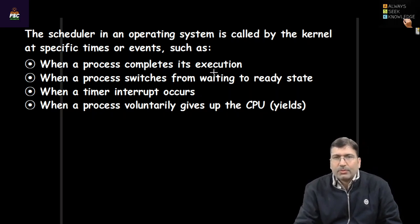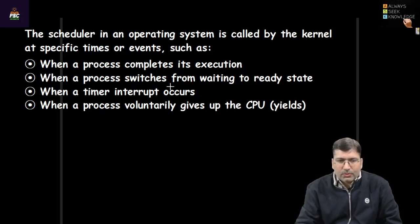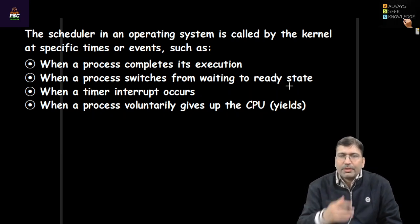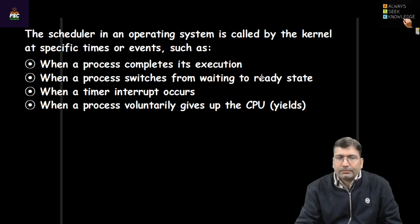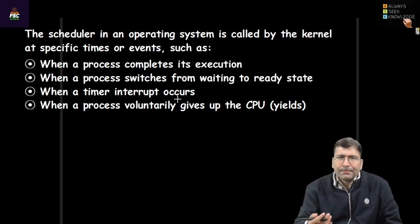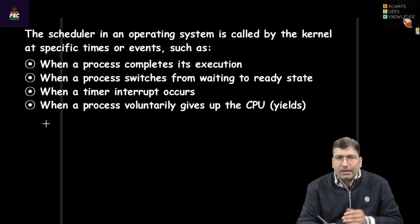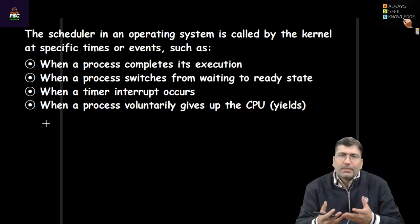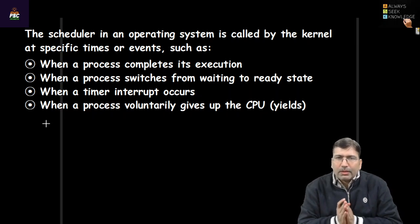The very first condition is when a process completes its execution — the kernel will invoke the scheduler module. The second case is when a process switches from waiting to ready state; if a process was waiting for IO and it switched from waiting to ready state, then the scheduler will be called. Third, when a timer interrupt occurs — after a time period, the system generates some interrupts and interrupts the executing process, like we have discussed in round robin scheduling. And fourth, if an executing process voluntarily releases the CPU control, then the scheduler will be invoked by the kernel.